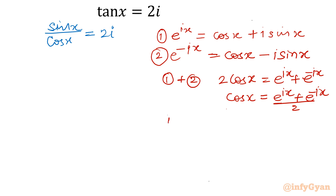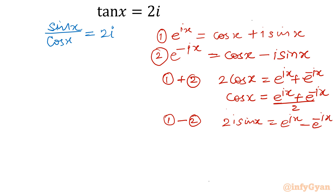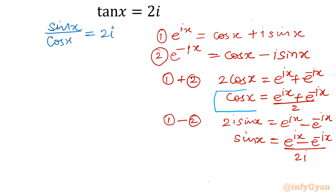Now subtract equation 2 from equation 1. The cos terms cancel and we get 2i sin x = e^(ix) − e^(−ix). Dividing both sides by 2i gives sin x = (e^(ix) − e^(−ix)) / 2i.